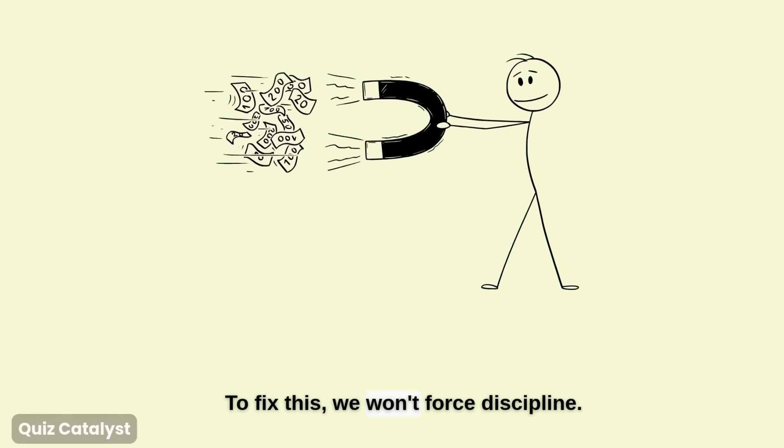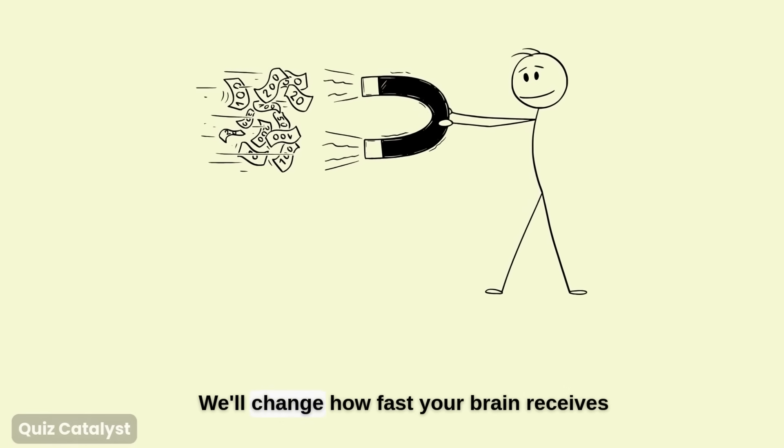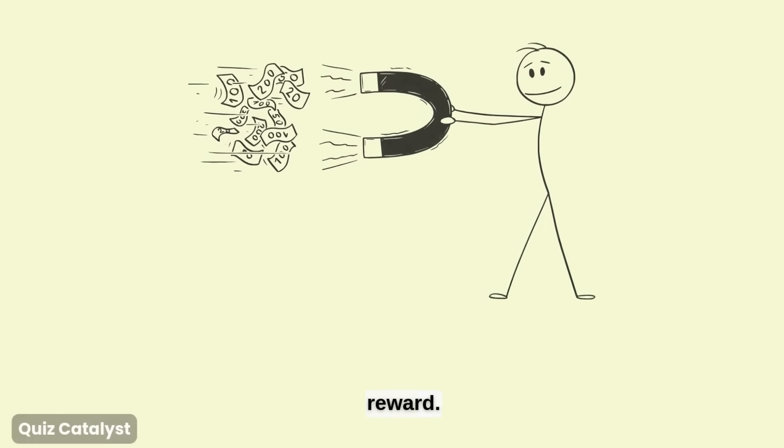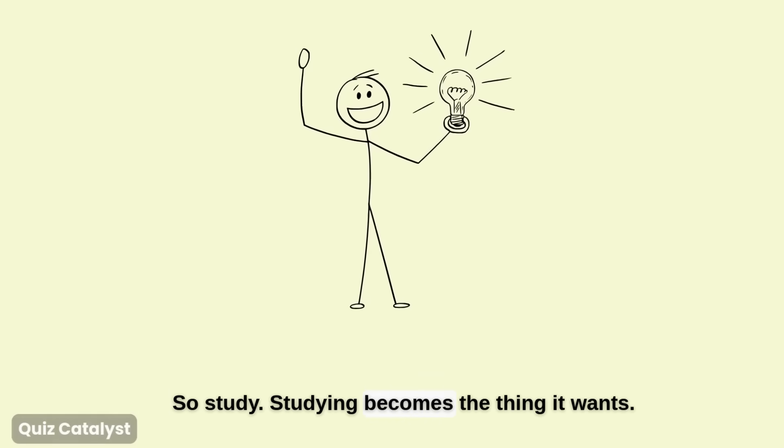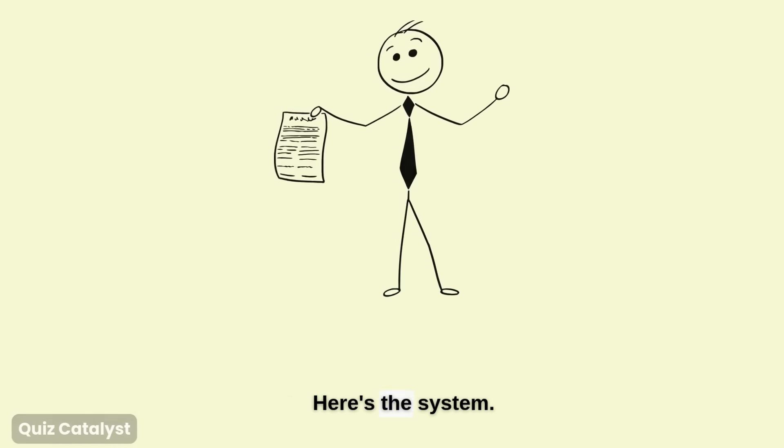To fix this, we won't force discipline. We'll change how fast your brain receives reward. So studying becomes the thing it wants. Here's the system.